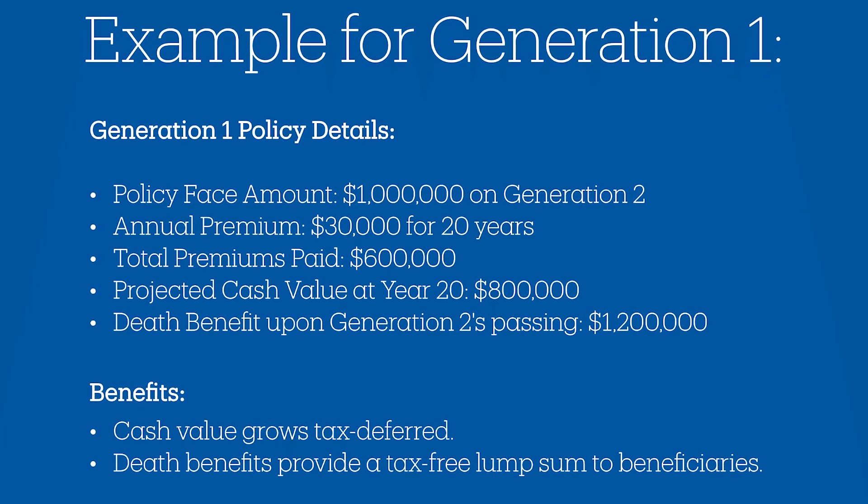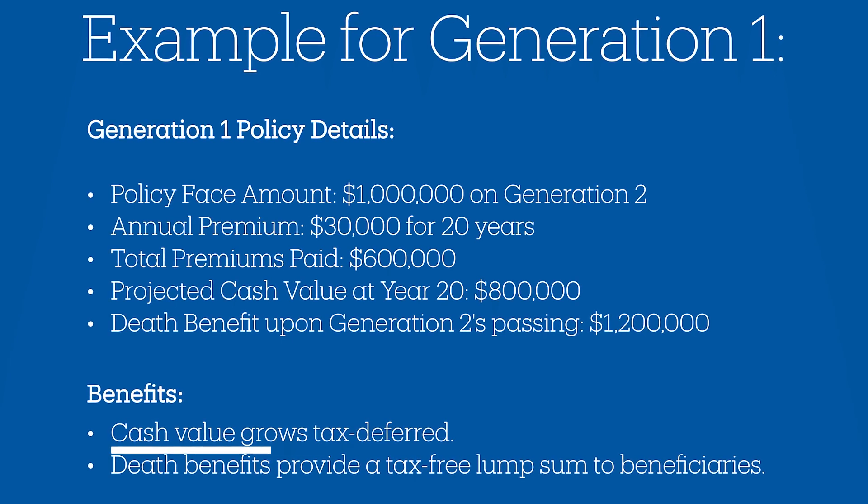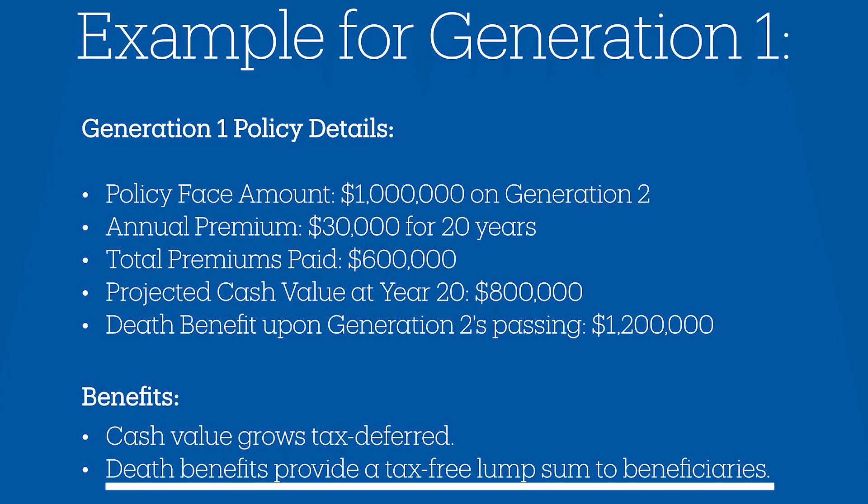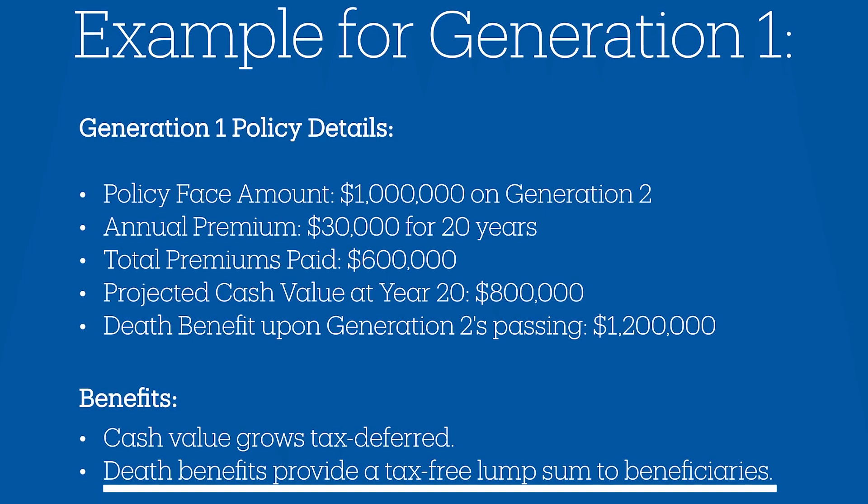The benefit here is the cash grows tax-deferred, and the death benefits can provide a tax-free lump sum to the beneficiaries. Because you have access to that cash value as it's being deferred, you can take loans against the policy backed up by the death benefit. So you can utilize that cash value while you're alive and still leave a tax-free death benefit.